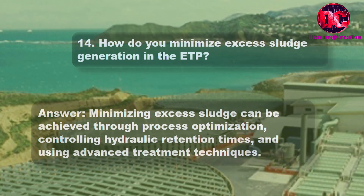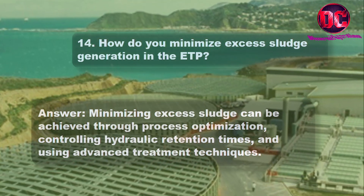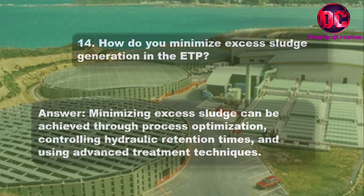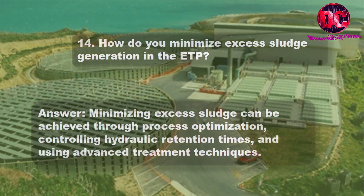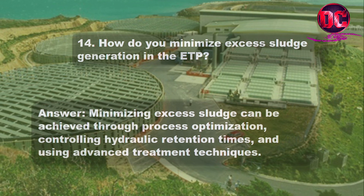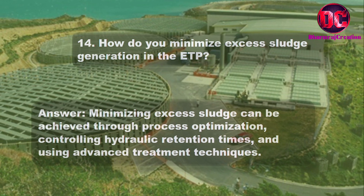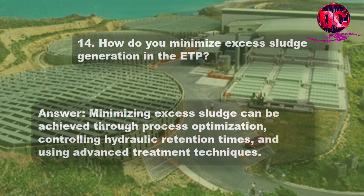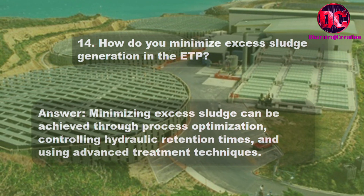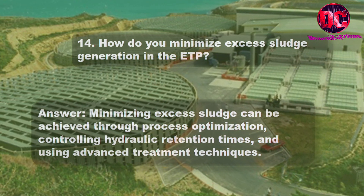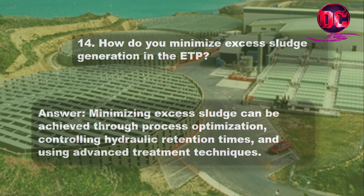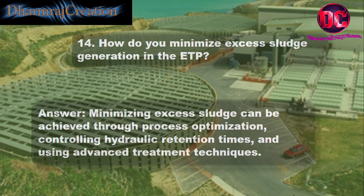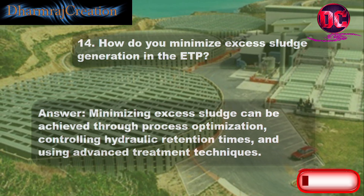14. How do you minimize excess sludge generation in the ETP? Answer: Minimizing excess sludge can be achieved through process optimization, controlling hydraulic retention times, and using advanced treatment techniques.